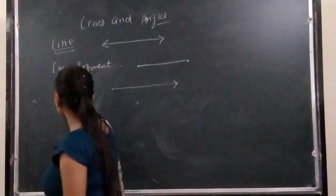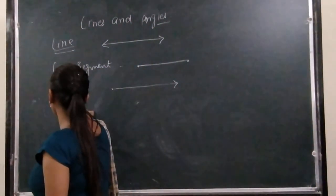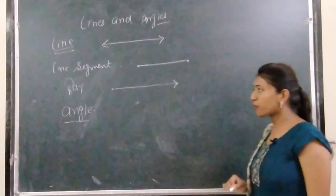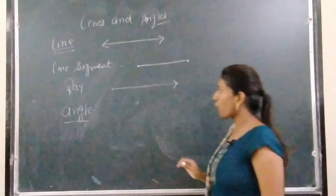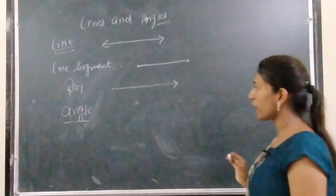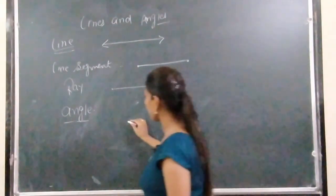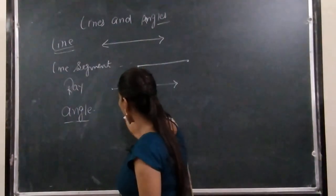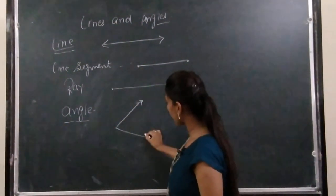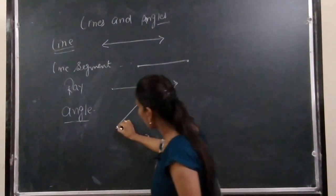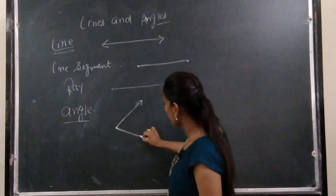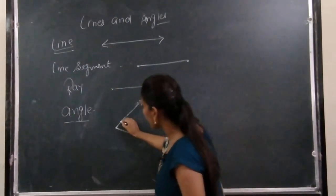Then comes angle. So what is an angle and how is it formed? An angle is formed when two rays originate from the same point — one ray and a second ray — then they form an angle.